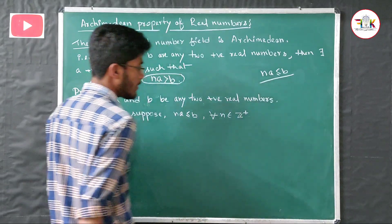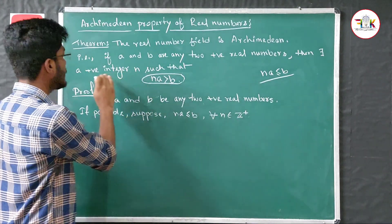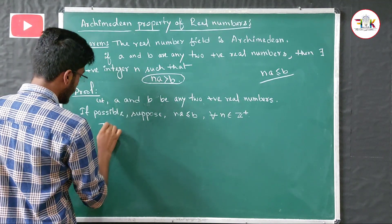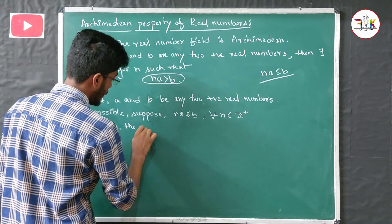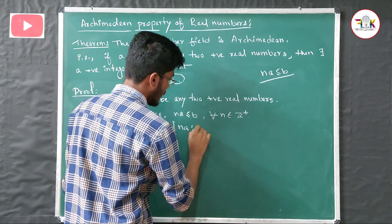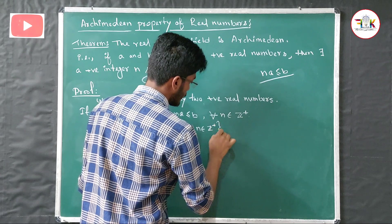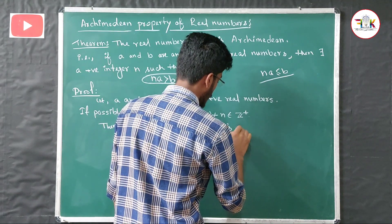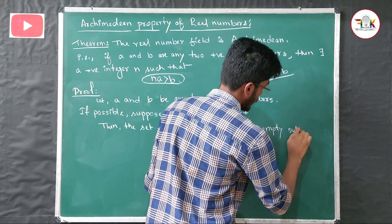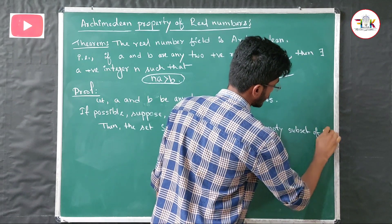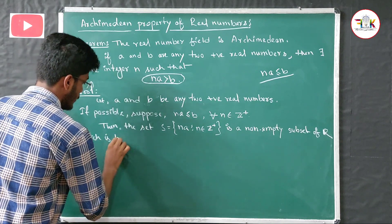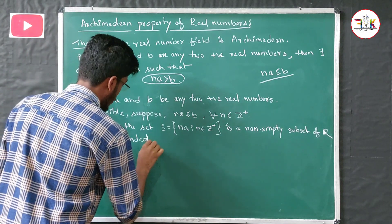Since n is a positive integer, let us define a set S = {na : n belongs to positive integers}. This set S is a non-empty subset of R, and it is bounded above. Now, why is it bounded above? From our earlier definition: a subset S of R is said to be bounded above if there exists a positive number k such that x is less than or equal to k for all x belonging to S.